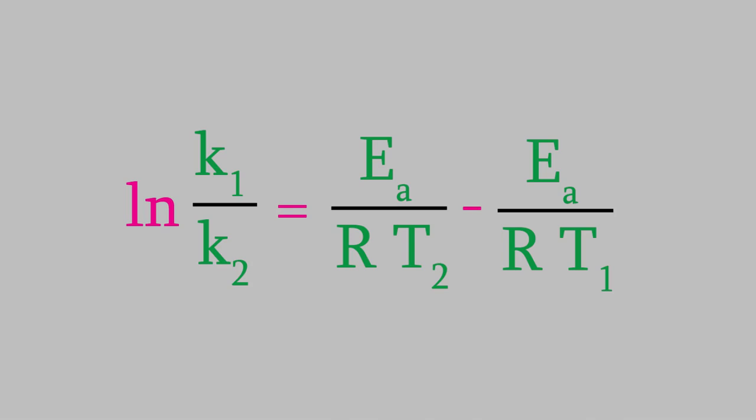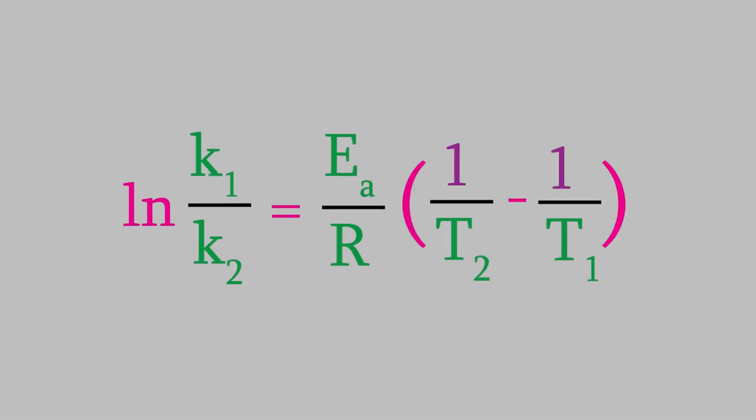Finally, we can make the right side a little simpler if we factor out Ea over R from each term. That leaves us with this equation. And this one is really useful.